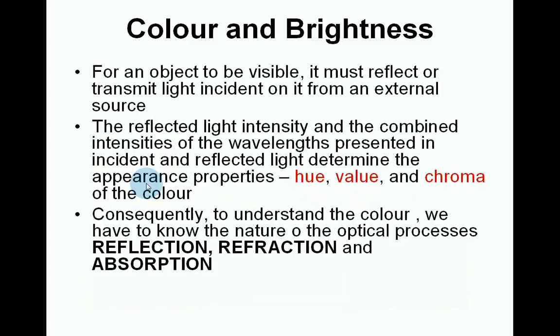Color and brightness. For an object to be visible, it must reflect or transmit light incident on it from an external source. The reflected light intensity and the combined intensities of the wavelengths present in incident and reflected light determine the appearance properties: hue, value and chroma of the colour. To understand colour, we must know the nature of the optical processes: reflection, refraction and absorption.